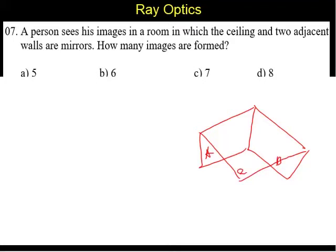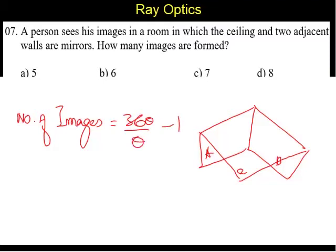Now, these two adjacent walls are at 90 degrees. So, number of images is 360 by theta minus 1. So, in this case, it is 360 by 90 minus 1.